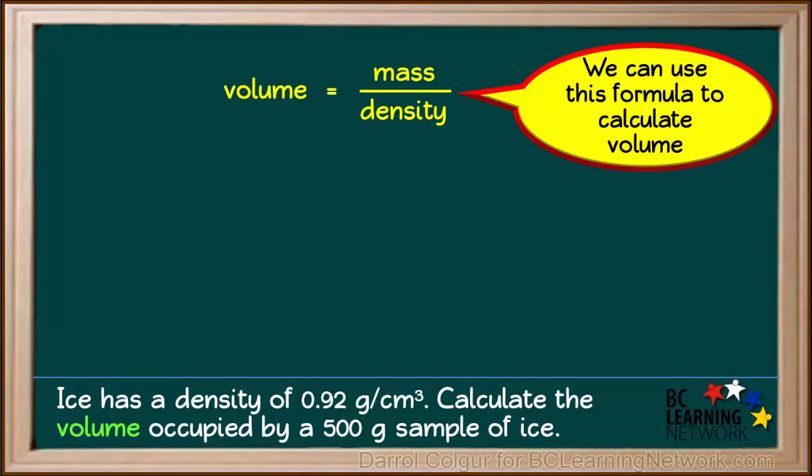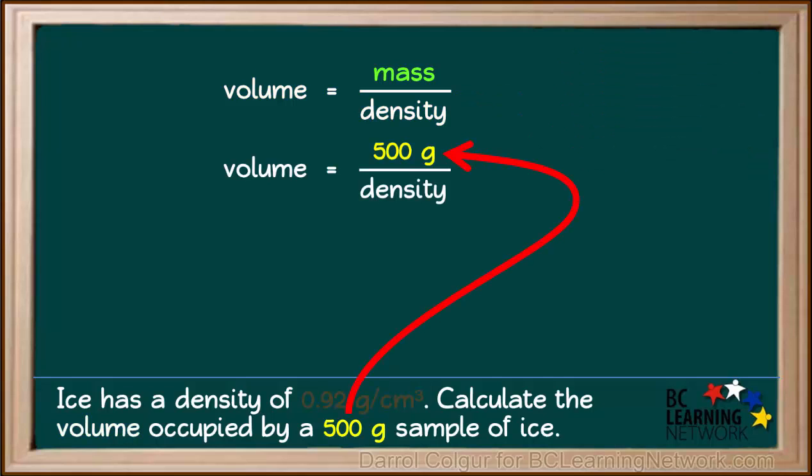So now we have the formula we can use to calculate volume, given mass and density. The mass of the sample is 500 grams, so we will substitute 500 grams in for mass. The density of ice is given as 0.92 grams per cubic centimeter, so we will substitute 0.92 grams per cubic centimeter in for density.